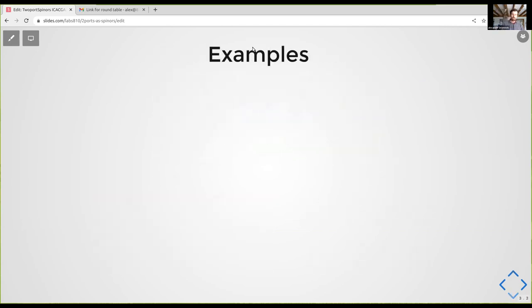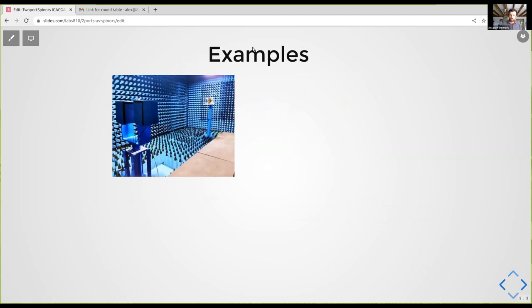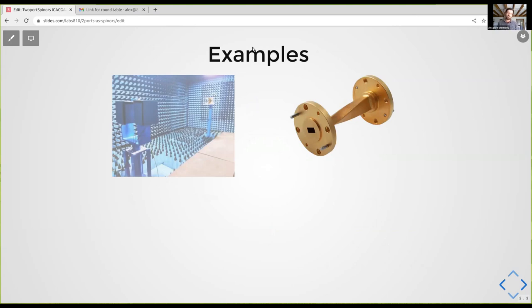And it's a complex linear algebra-based model. So just to give you some examples of some microwave two-port circuits, here's a pair of antennas in an antenna chamber. Here's a waveguide twist at I don't know, 70 gigahertz or something.